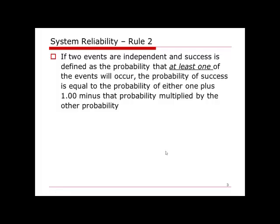The second structure is what I call a parallel structure. It states that two events are independent and success is defined as the probability that at least one of the events will occur. Then the probability of success equals the probability of either one plus one minus that probability, multiplied by the other probability. This is how the calculation is done.